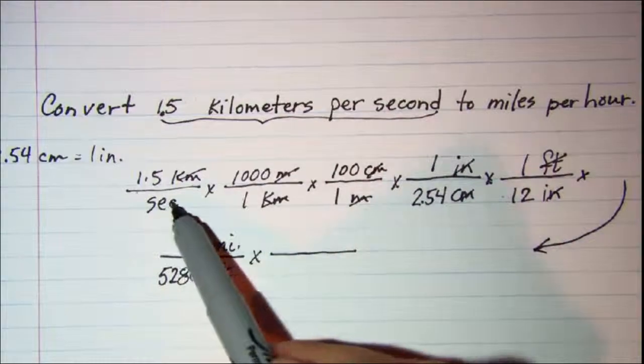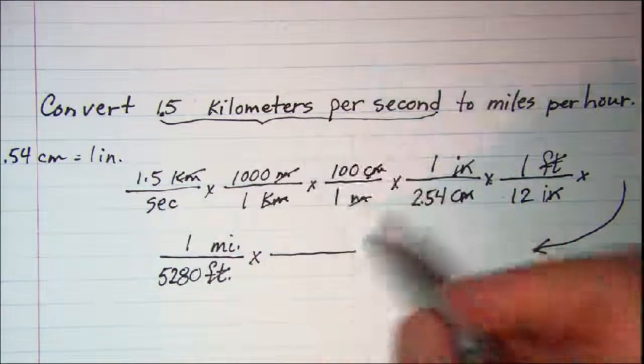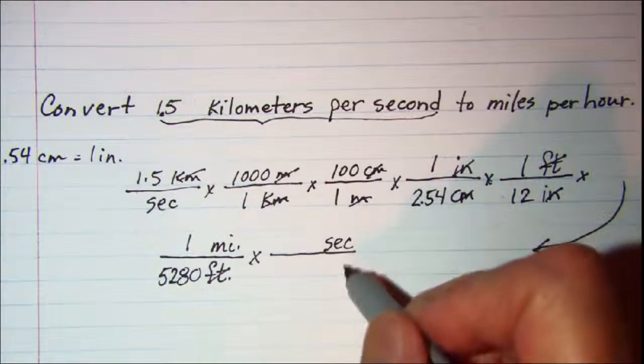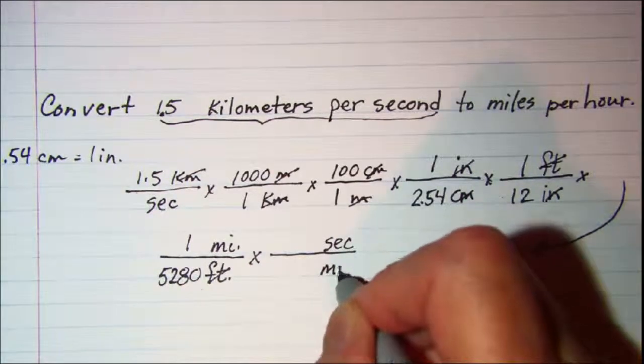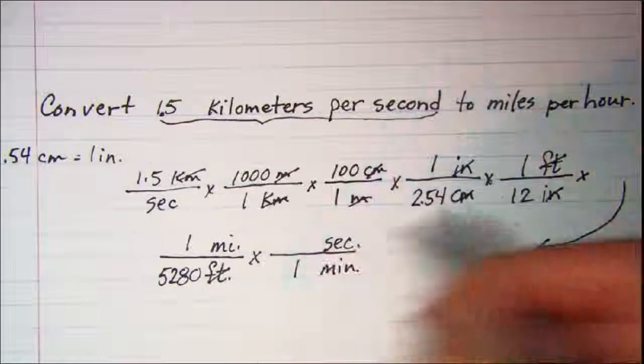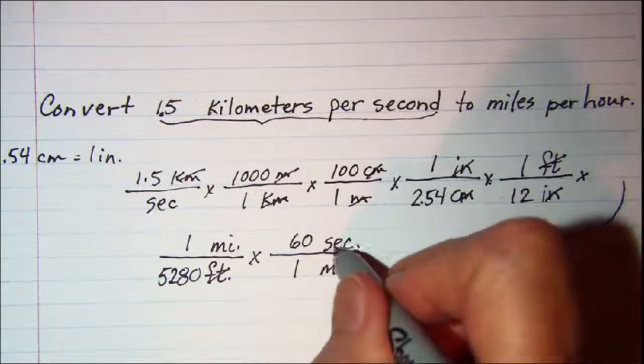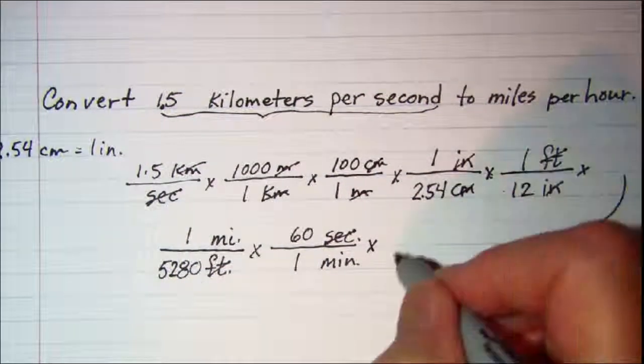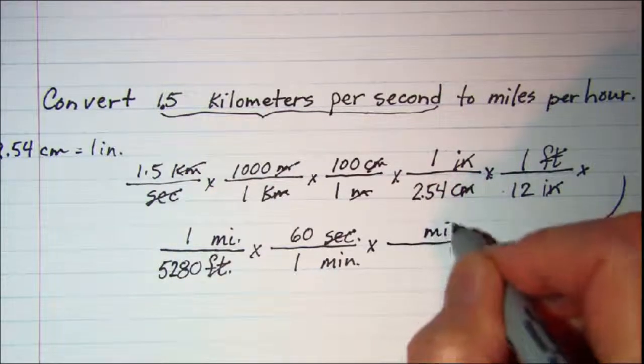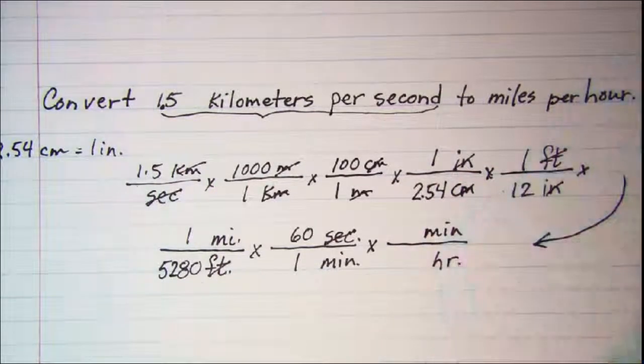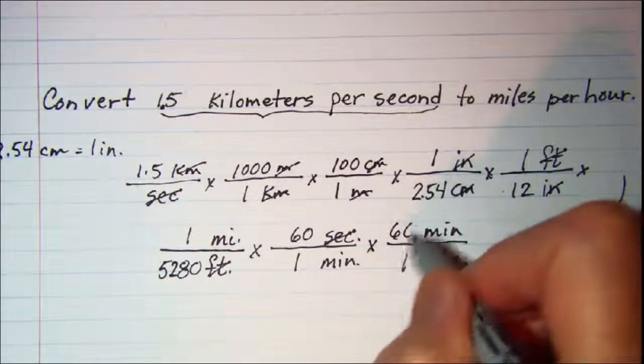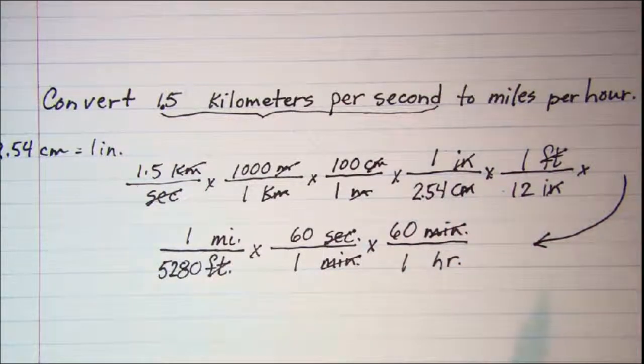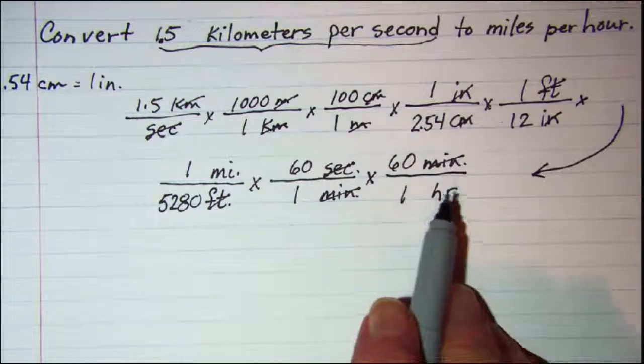I need to convert this second in the denominator I need a second in the numerator so that it will cancel and my equivalence there is from seconds to minutes and I know 1 minute is 60 seconds. Now my seconds in the top will cancel with the seconds in the bottom and then I need to go from minutes to hours and I know 1 hour is 60 minutes. So this minutes in the top cancels with this minutes in the bottom.